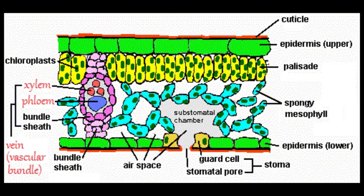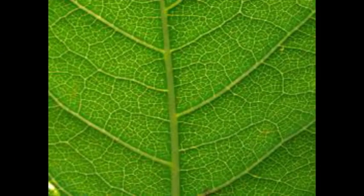There is one last part to the transport system. Photosynthesis requires water and mineral nutrients like magnesium and nitrates. These come from the soil and travel up inside the plant or tree to the leaves in a network of xylem cells. The phloem and the xylem share a network and can be seen as a vascular bundle in the cross section of leaves.